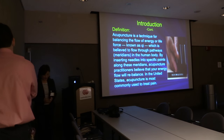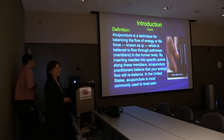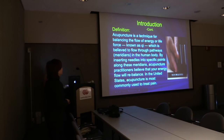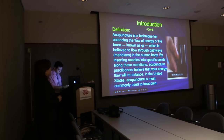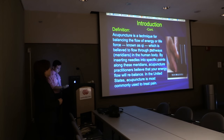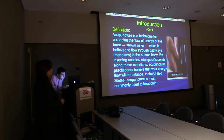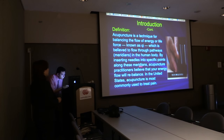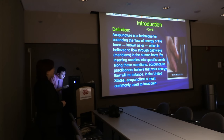So, what is acupuncture and how does it work? Acupuncture is a technique for balancing the flow of energy, or life force, known as qi, which is believed to flow through pathways — in other words, meridians — in the human body. By inserting needles into specific points along those meridians, acupuncture practitioners believe that your energy flow will re-balance.